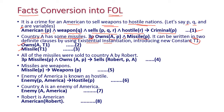For 'all missiles were sold to country A by Robert': for all p, Missile(p) ∧ Owns(A, p) ⟹ Sells(Robert, p, A). This is the fourth statement. Next, 'missiles are weapons' converts to: Missile(p) ⟹ Weapon(p). This is the fifth statement.